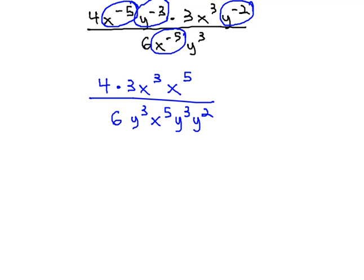Now that everything has a positive exponent, we can continue simplifying the numerator and the denominator separately. In the numerator, 4 times 3 is 12, and the product rule of exponents tells us that we add the exponents on the x's. 5 plus 3 is 8.